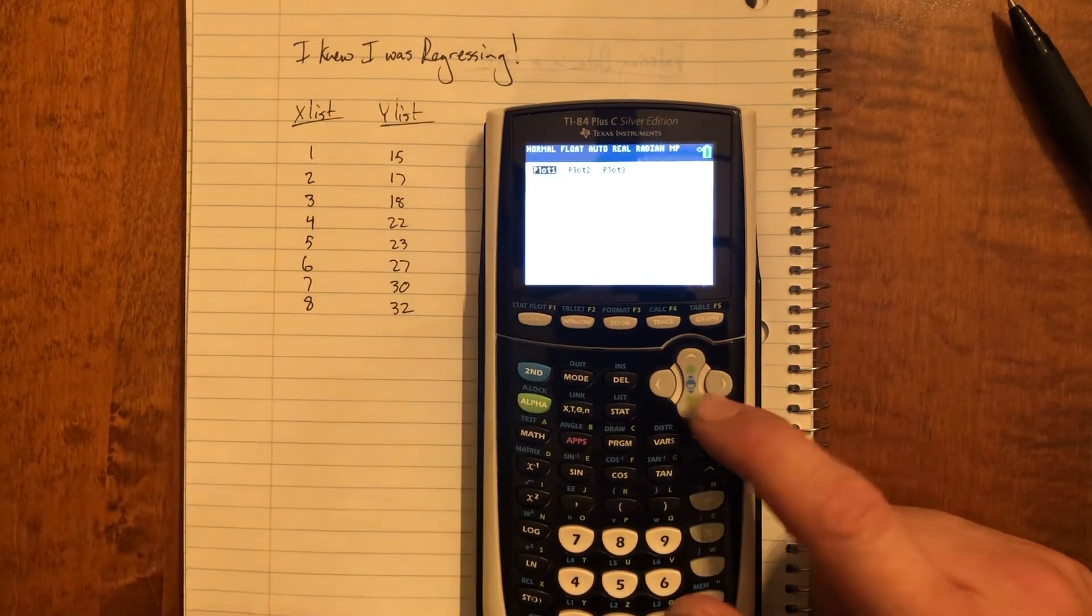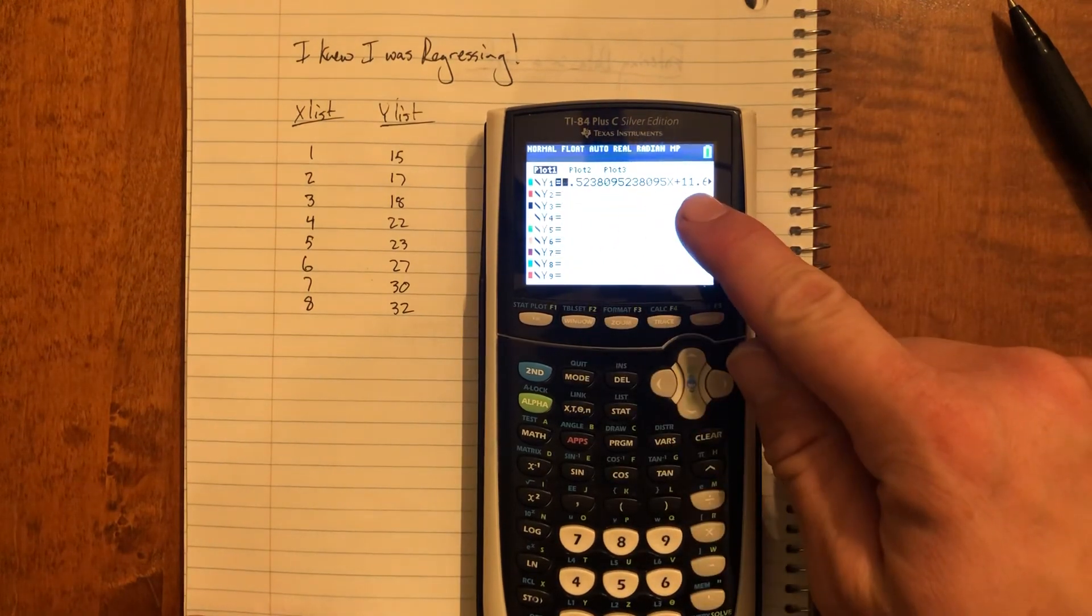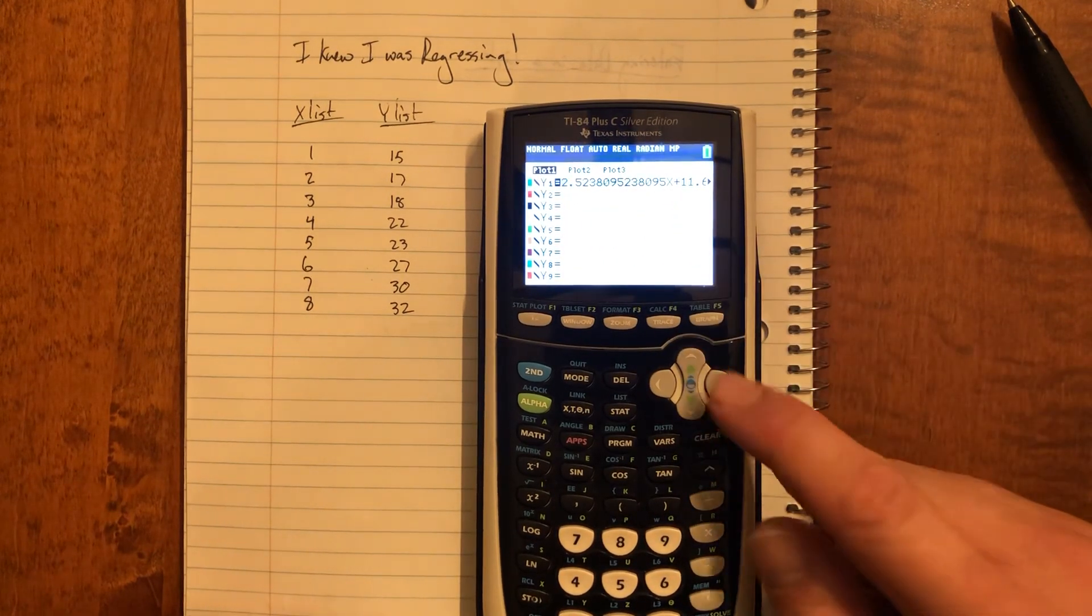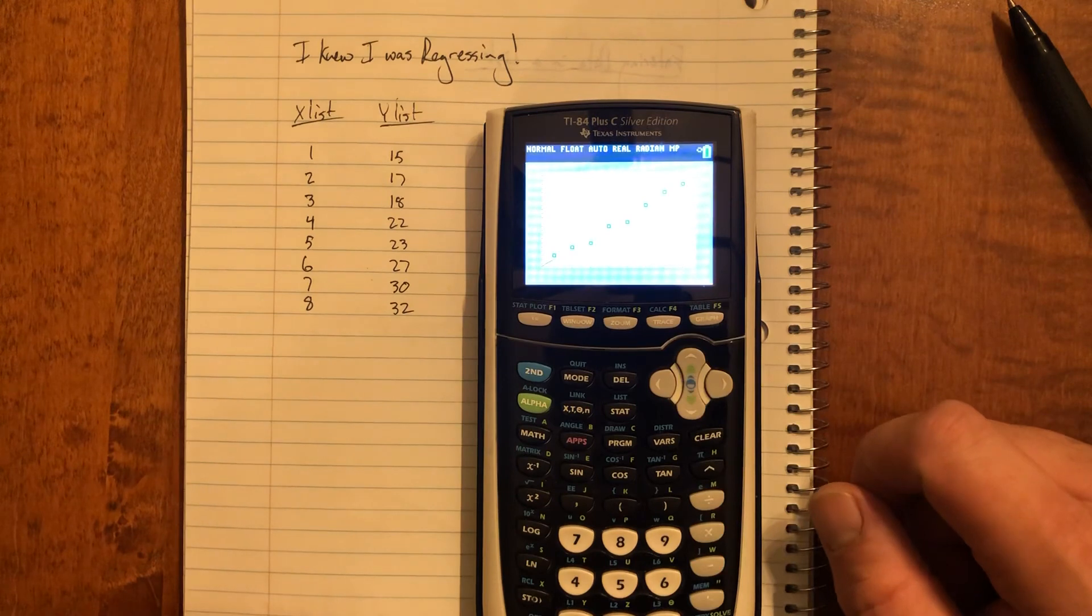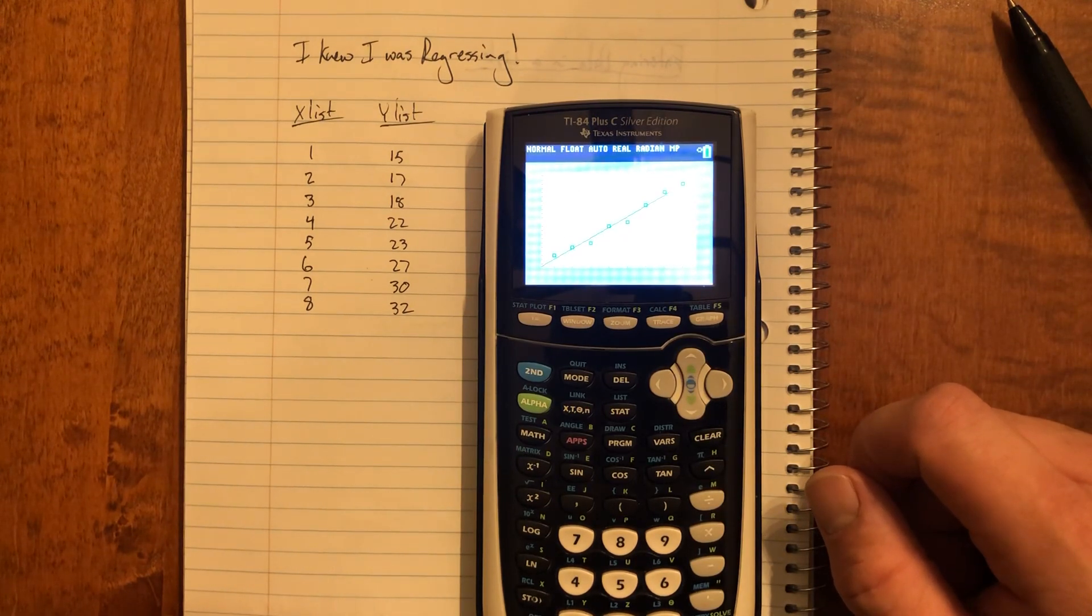So I'll press y equals, and you'll see my a and b is automatically stored there with that equation. I'll go ahead and I'll press graph, and you'll see my line of best fit. Oh, what an excellent line of best fit it is, coming across and through.